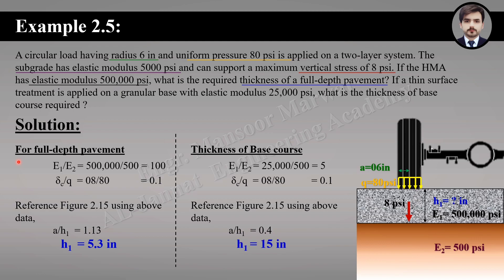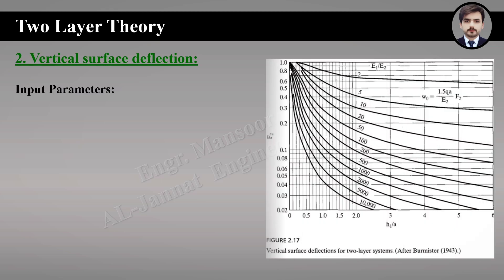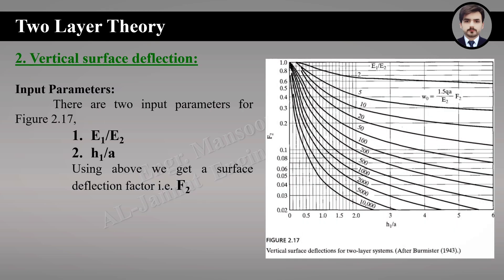For the second part of Example 2.5: if a thin surface treatment is applied on a granular base with elastic modulus 25,000 psi, what is the required thickness of the base course? Now E1 has changed, so the modulus ratio changes to 5, while the vertical stress to tire pressure ratio remains the same. Using Figure 2.15, we get a radius-to-thickness ratio of 0.4. Putting in the radius of 6 inches, the required base course thickness is 15 inches.